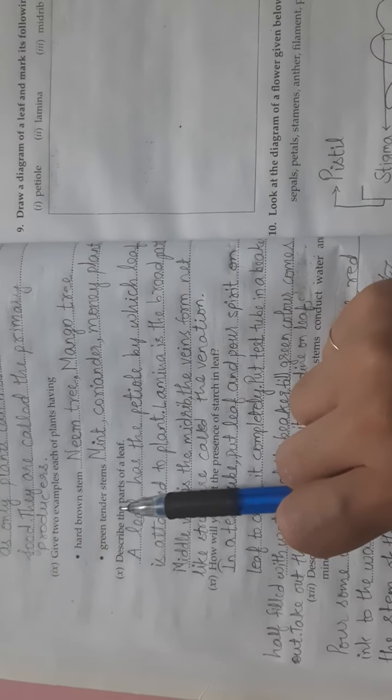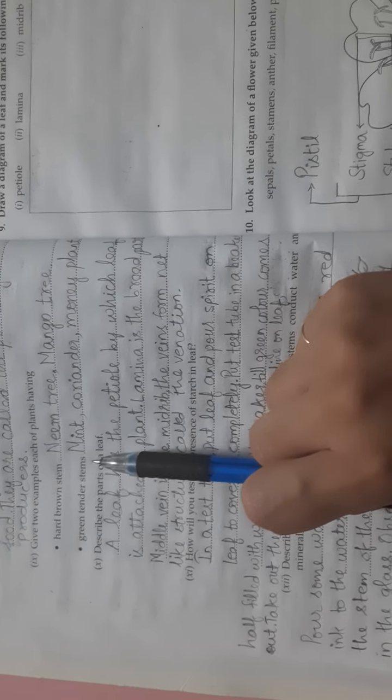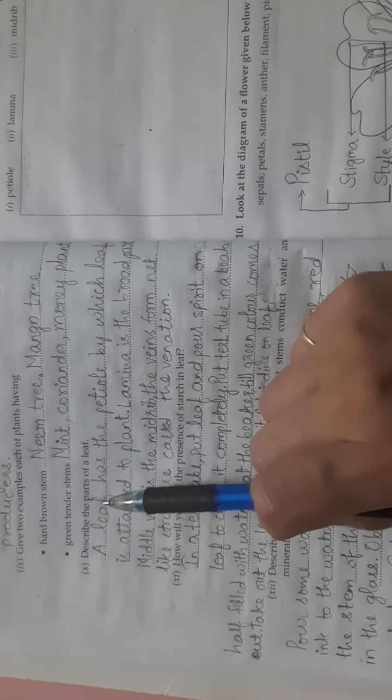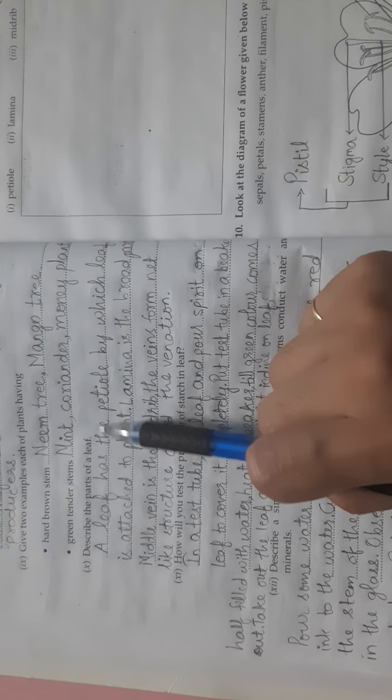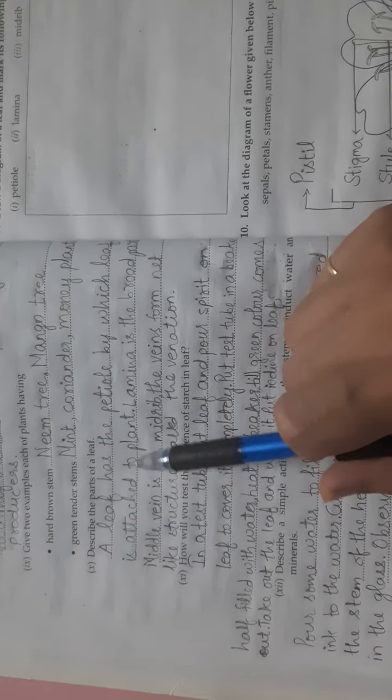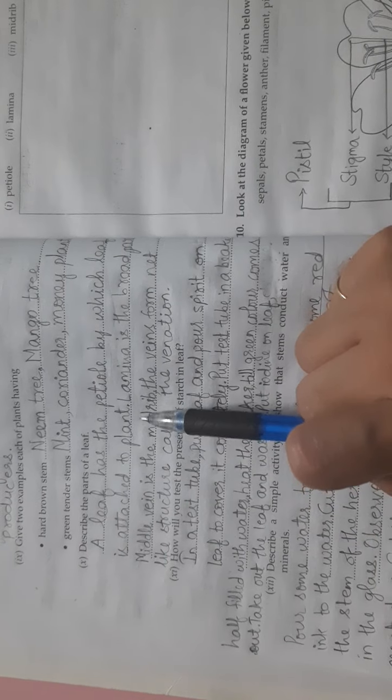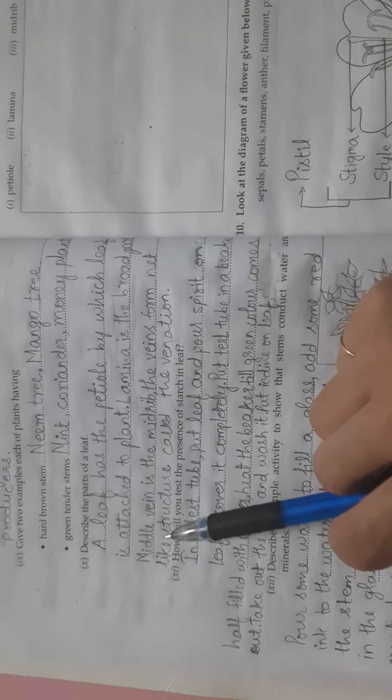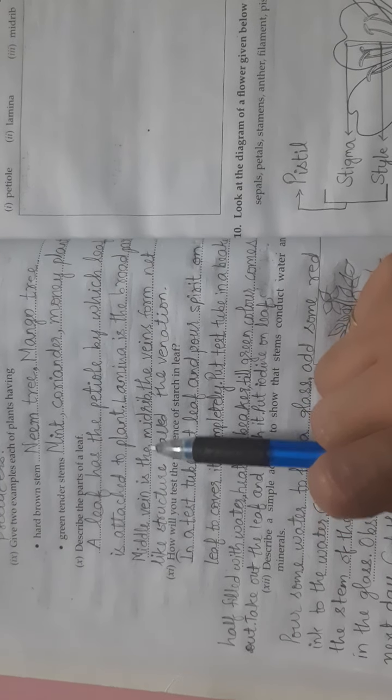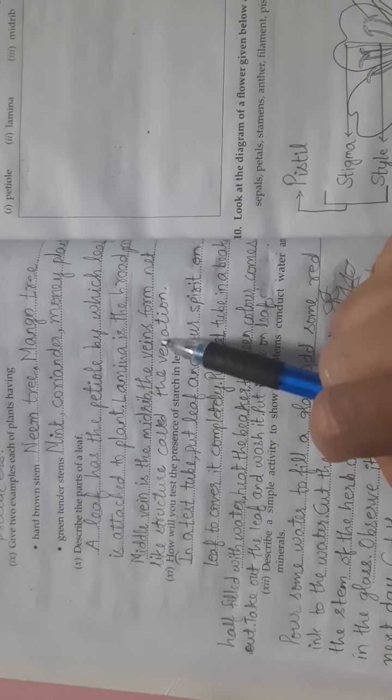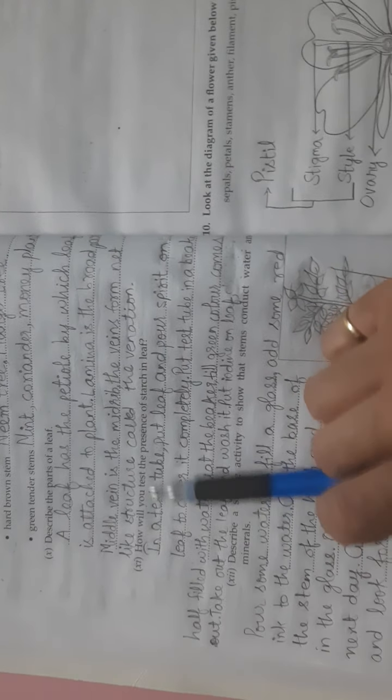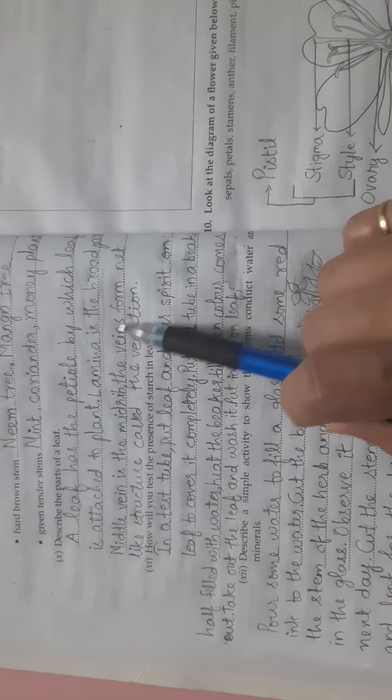The tenth is, describe the parts of a leaf. Answer: A leaf has the petiole by which leaf is attached to plant. Lamina is the broad part. The middle vein is the midrib. The veins form net-like structure called the venation.